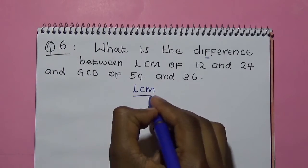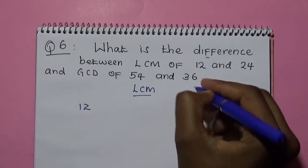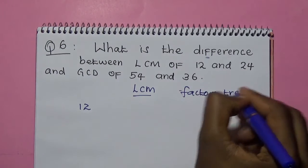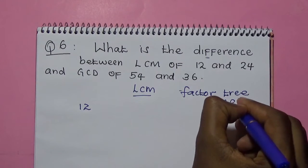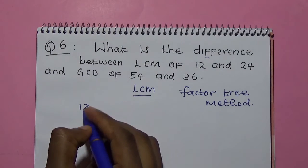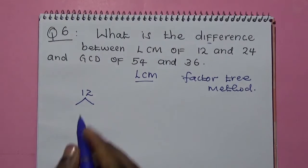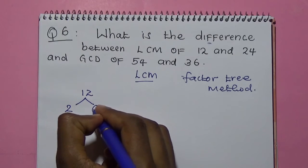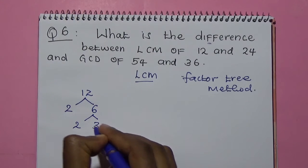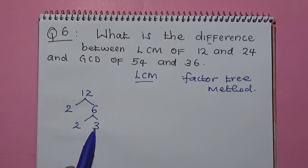To find the LCM of 12, we are going to use the factor tree method. We calculate the prime factors of 12. The prime factors of 12 will be 2 because of 6, then 2 and we have 3. Therefore, the prime factors are 2 times 2 times 3.